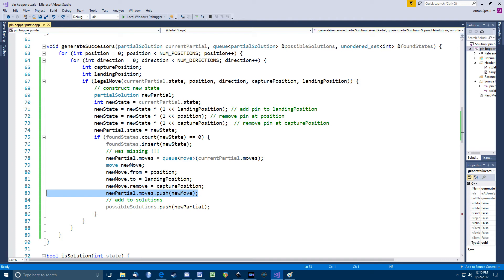This is one of the mistakes I made originally. I somehow forgot to copy the queue of moves over from the current partial solution, which meant that when my program actually found a solution, it would only output the last move in the chain, which was kind of cruel, really. Anyway, the new partial solution is then added to the queue of possible solutions.